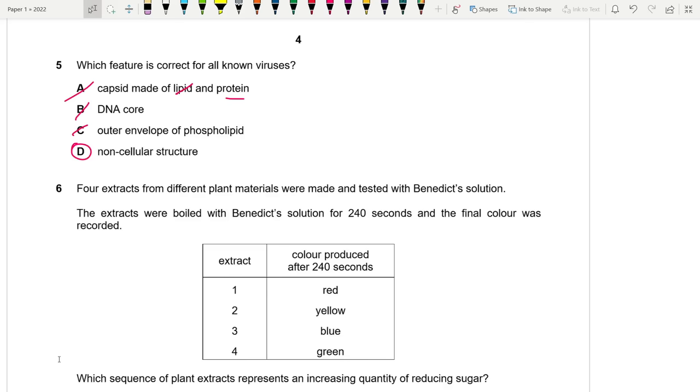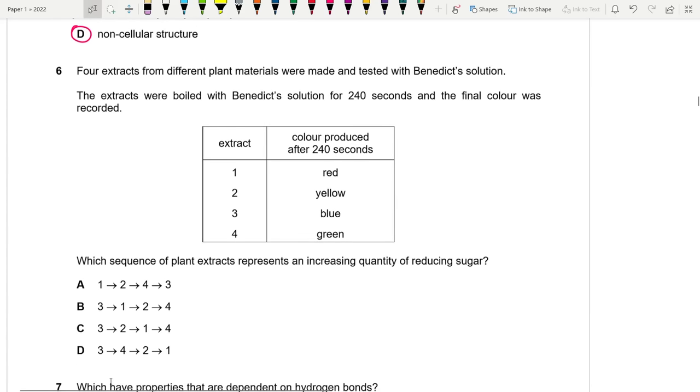Four extracts from different plant materials were made and tested with Benedict's solution. The extracts were boiled with Benedict's solution for 240 seconds and the final color was recorded. Which sequence of plant extracts represents an increasing quantity of reducing sugar? So red is the highest. Basically, one should be at the end. So we're gonna go with D. This is how you do MCQs faster, by the way. But you can still check. Blue is the least color, so it will start from three. So it goes from blue to green to yellow to red. This is the order.